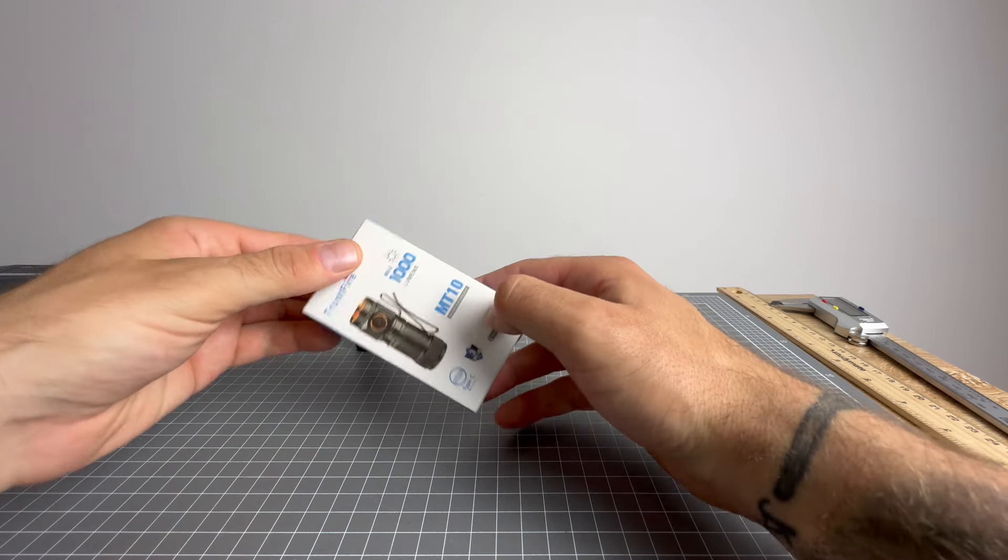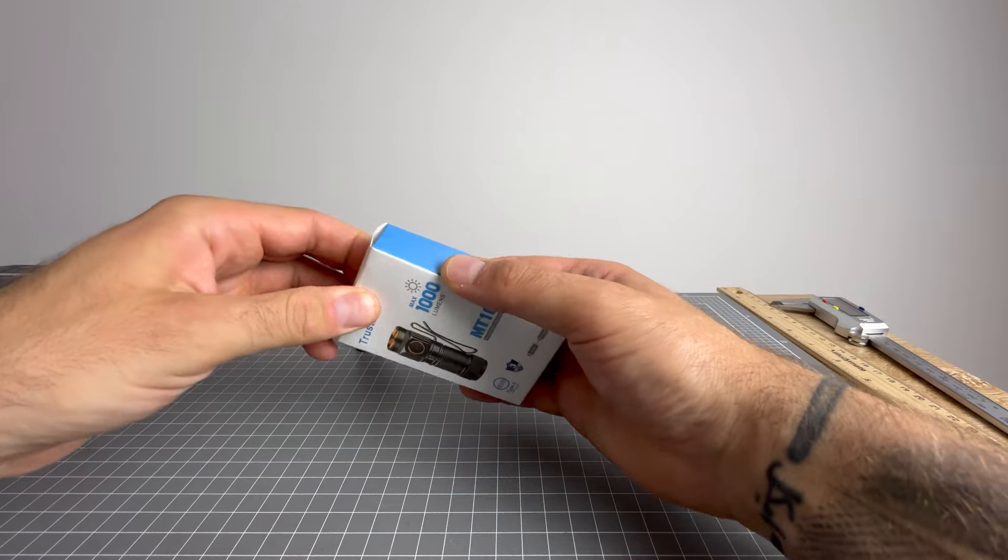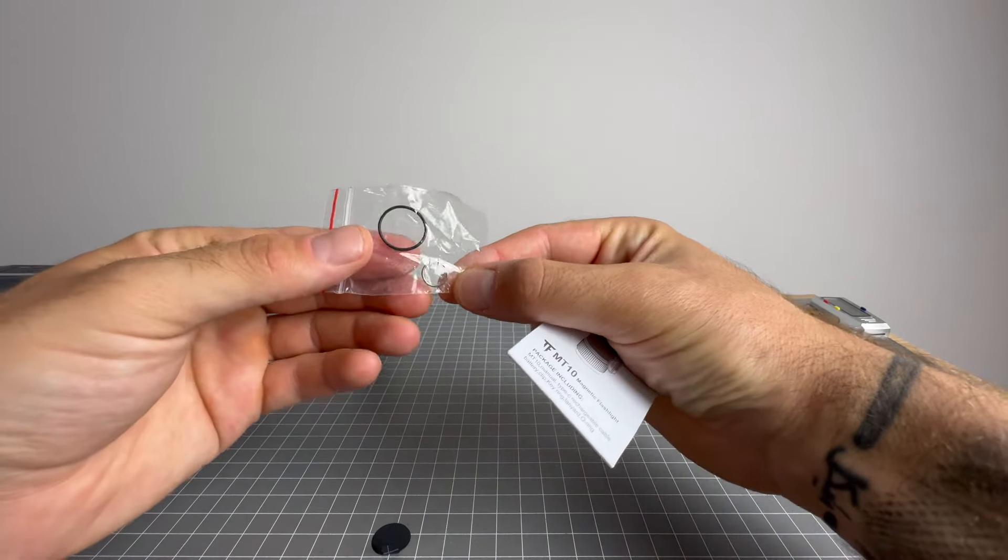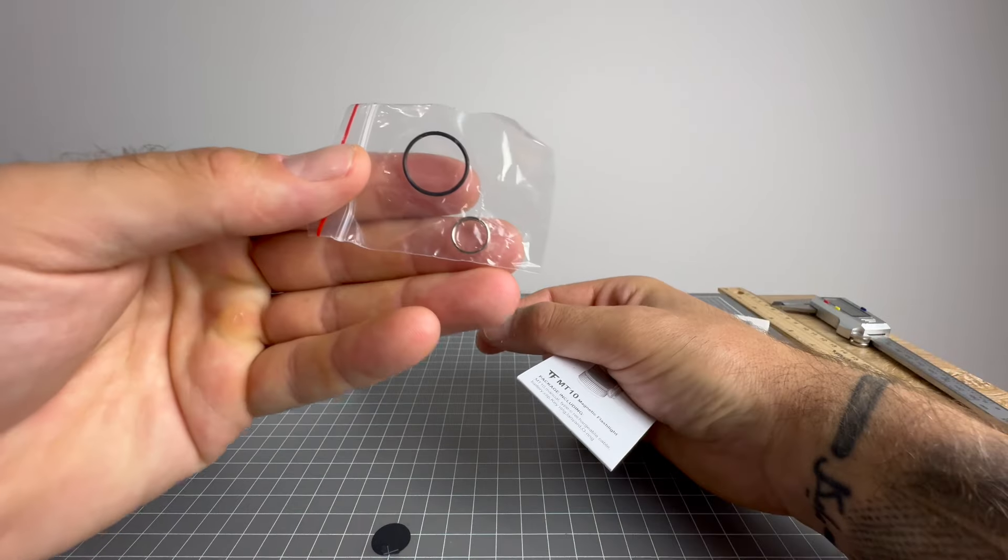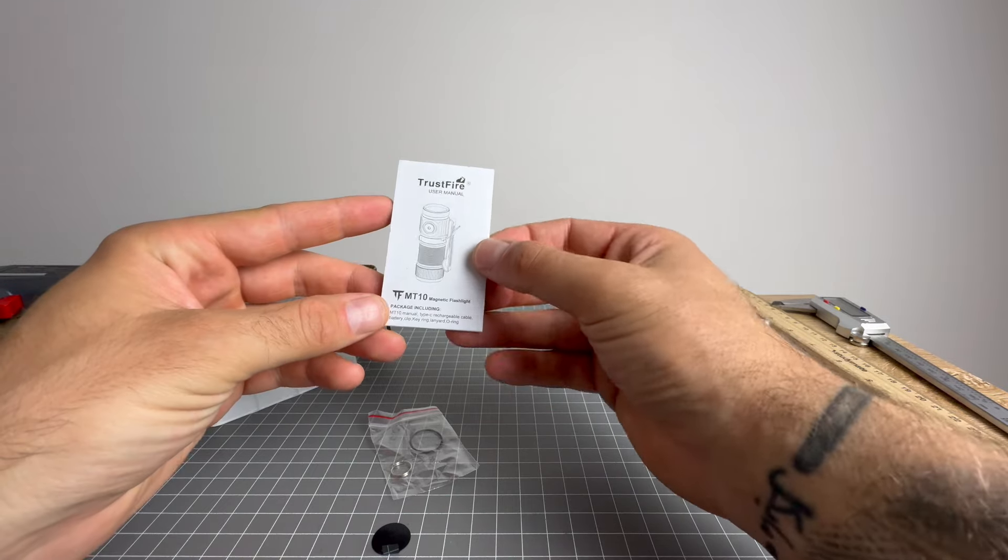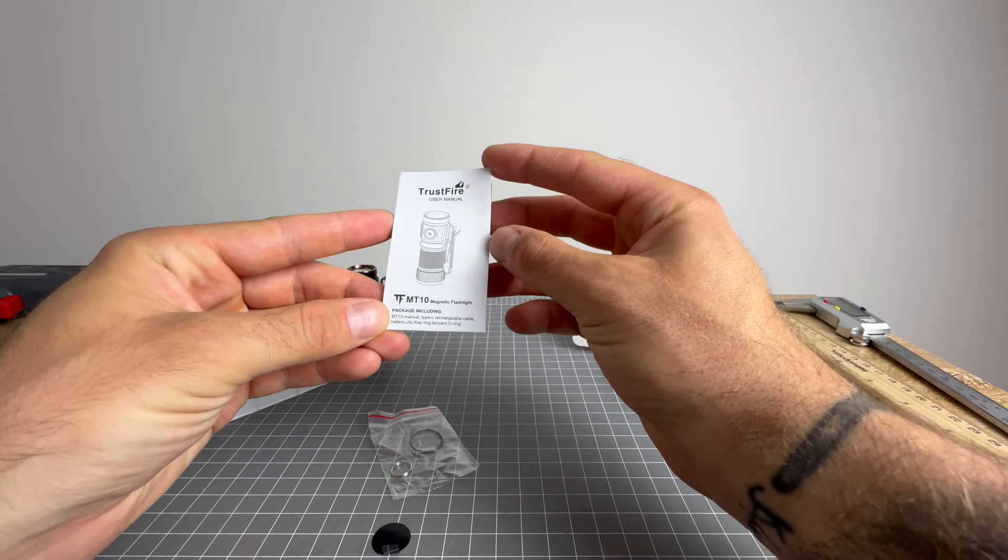Alright, here we are with the MT-10. Inside the box, you will get a keychain attachment, that metal keychain attachment there. You will get a spare O-ring, and you will get the Trustfire MT-10 user manual.